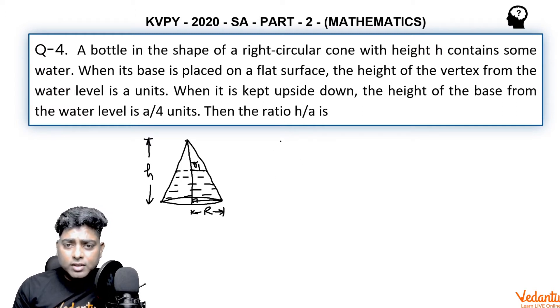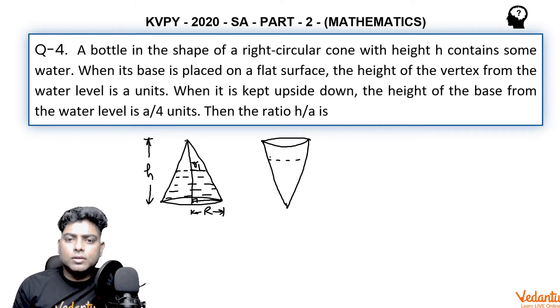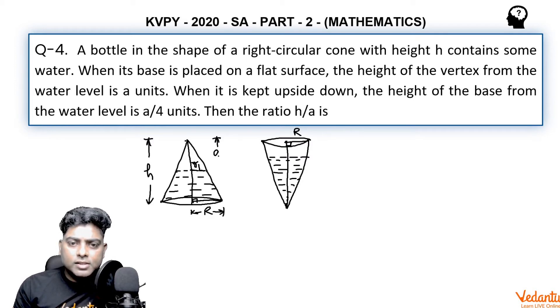When it is kept upside down like this, water level will be higher here. So here again it is capital R, same cone. This height is again h, the same. But here in this question it is given that this is a. The height of the vertex from the water level is a units, and here it is only a by 4.